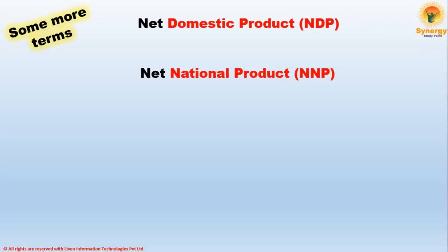Under National Income Accounting we had seen the terms GDP and GNP. In this video we will be talking about NDP and NNP, and we will also be using the term depreciation. If you have not seen the video on depreciation, it is advised you do so before beginning this video. Net Domestic Product i.e. NDP and Net National Product i.e. NNP.